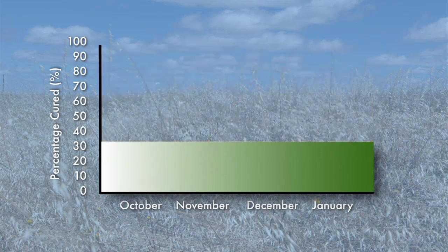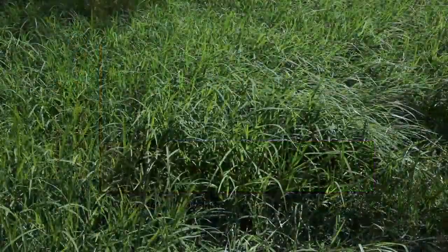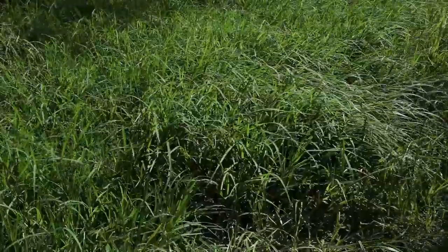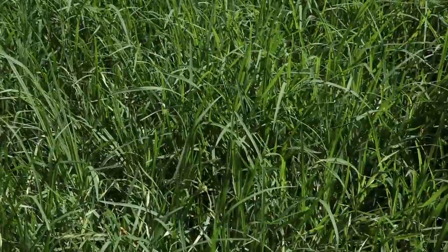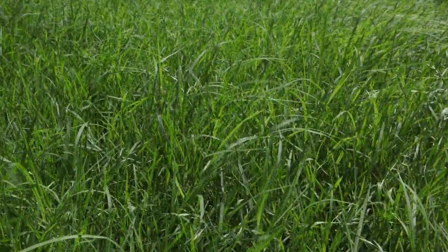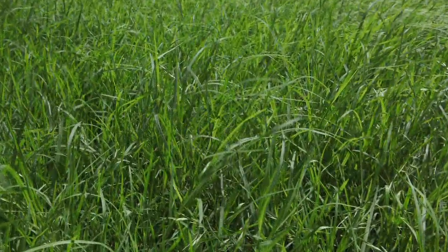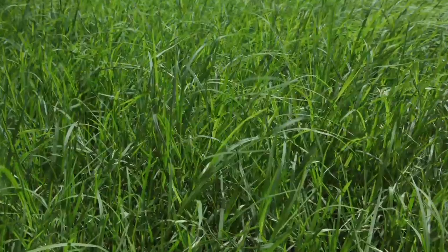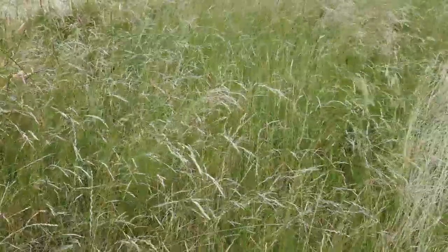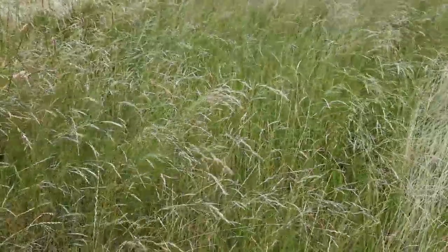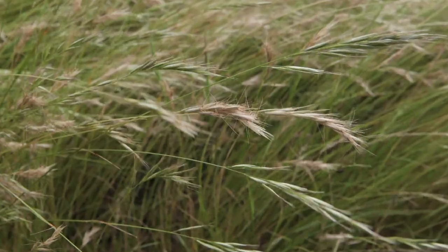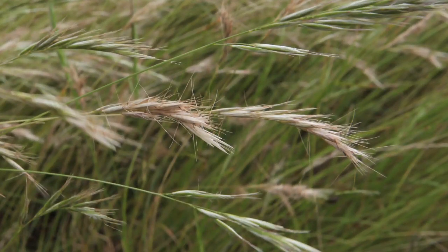Let's look at the green phase. This is when the grass is between zero and thirty percent cured. Here is an example of grass at zero percent — as you can see the grass is all green and there are no seed heads at all. This is grass at thirty percent cured, with some yellow showing and well developed seed heads which are starting to drop seed.